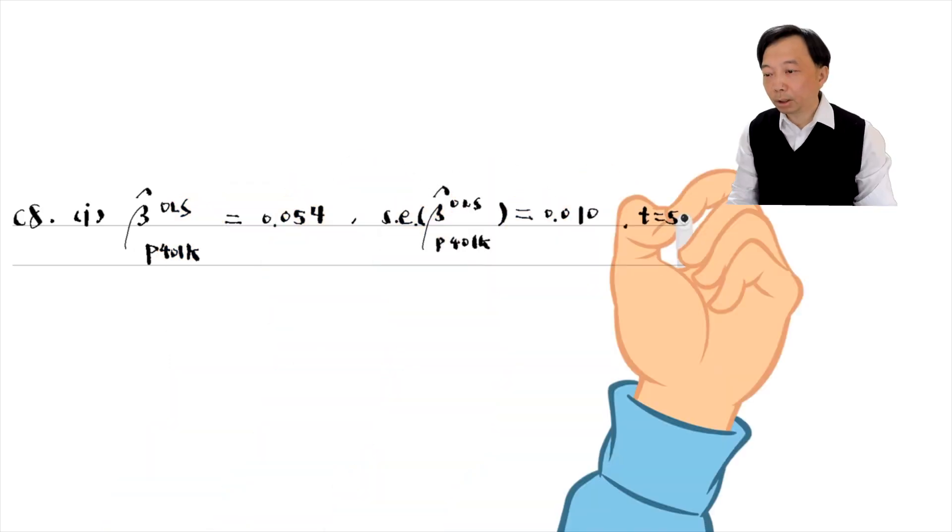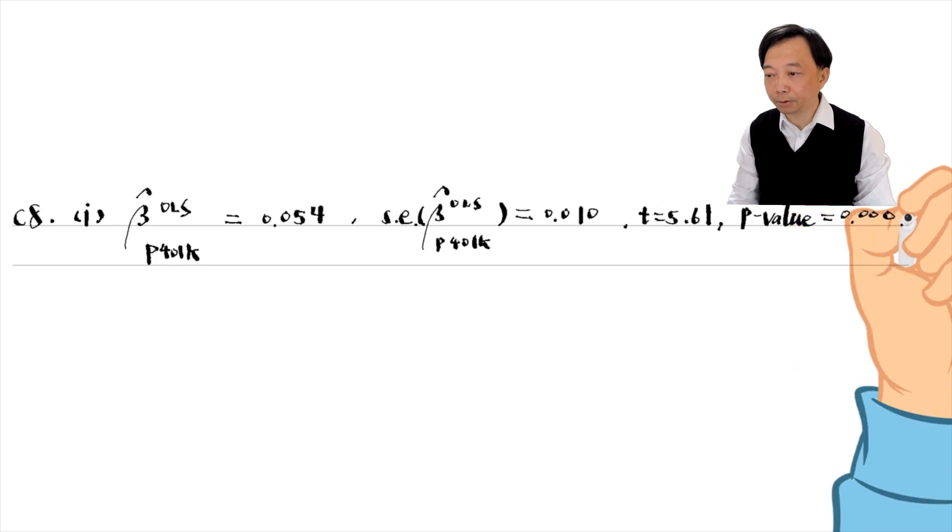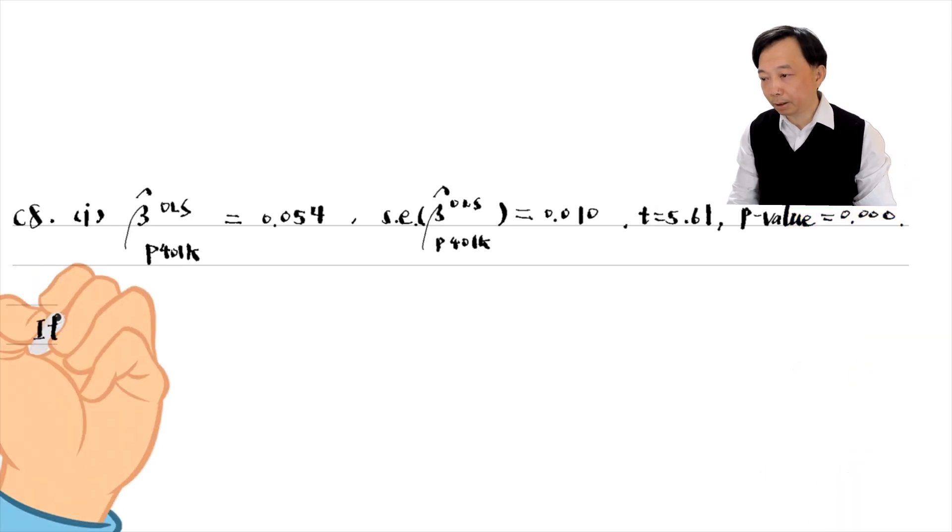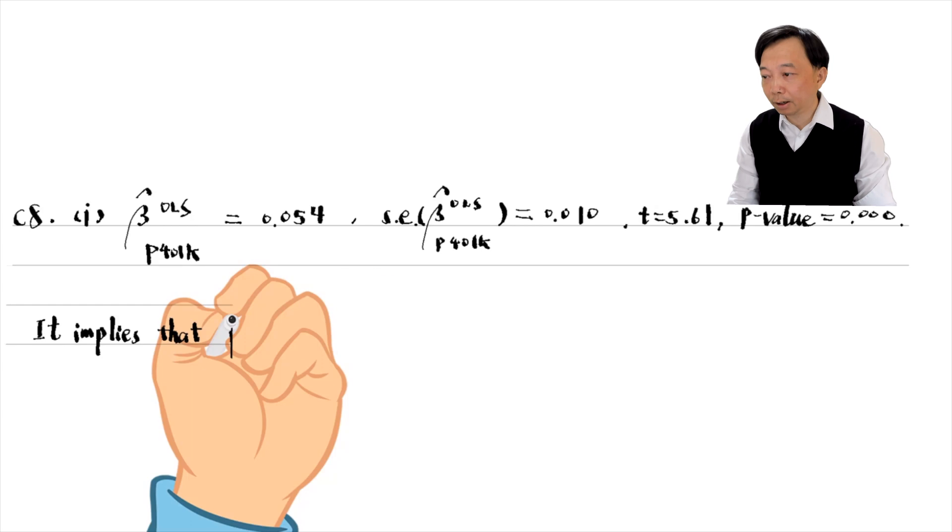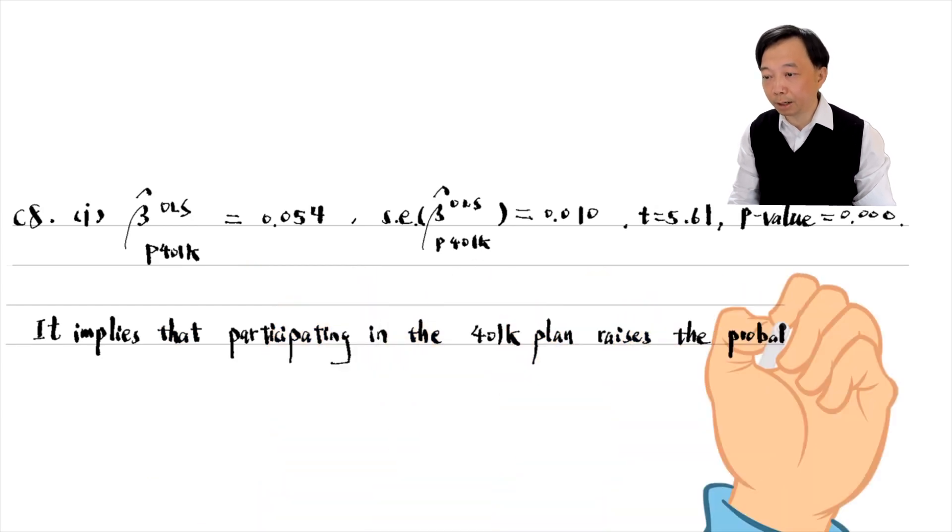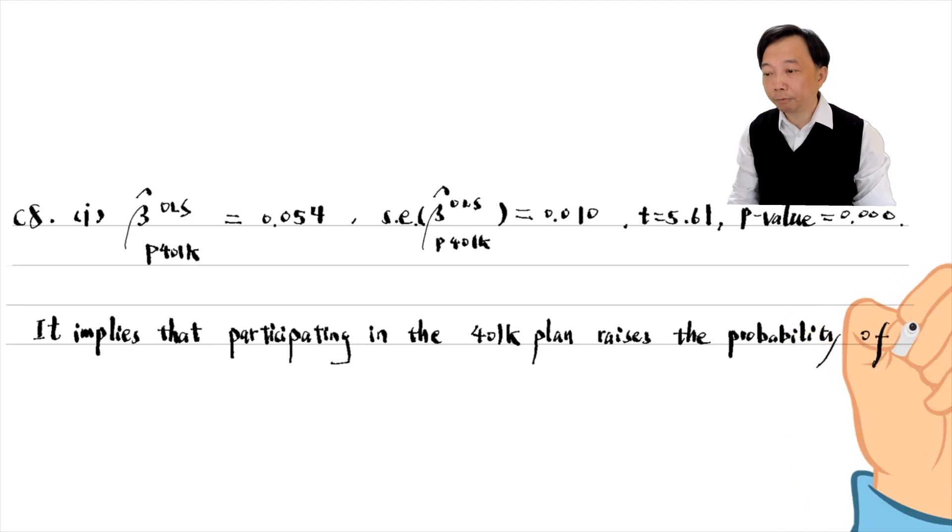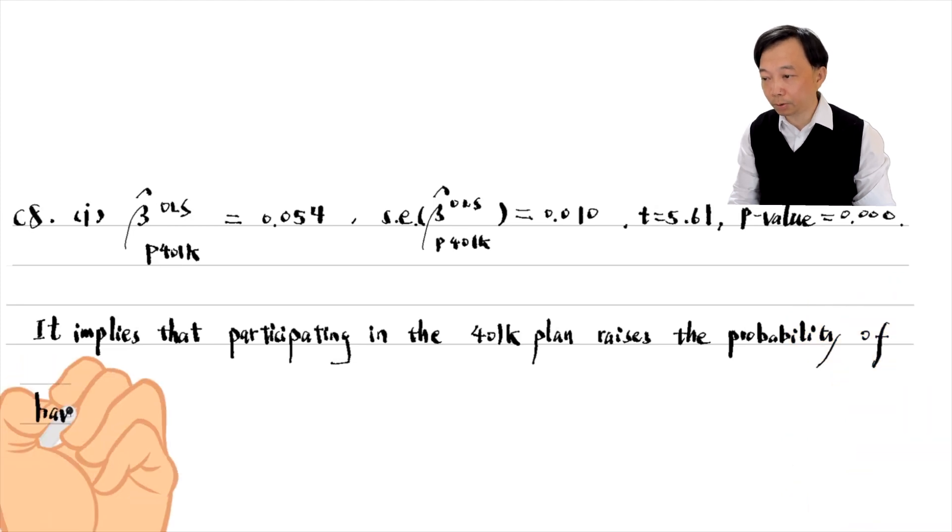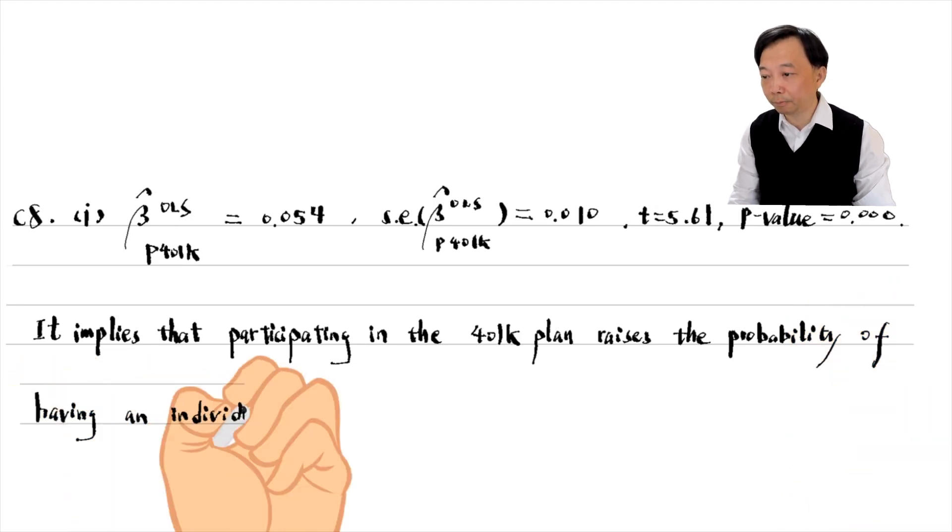The coefficient on P401k implies that participating in the 401k plan raises the probability of having an individual retirement account by 5.4 percentage points, holding age and income fixed.